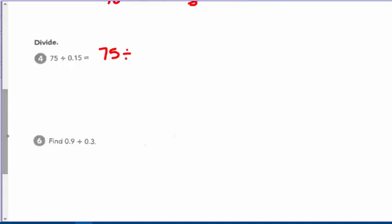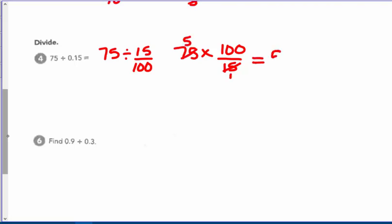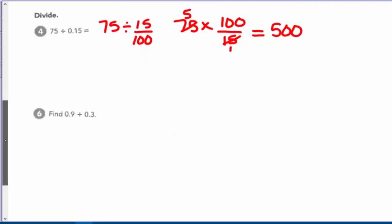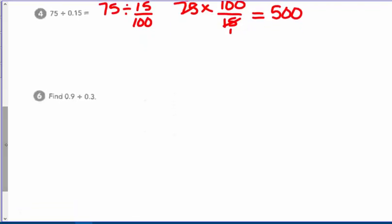75 divided by fifteen-hundredths: change it to 75 times the multiplicative inverse, one-hundred-fifteenths. 15 is a factor of 75 — it goes in five times — so five times a hundred is 500. It's a fraction-friendly problem; way better than doing long division with a decimal. Nine-tenths divided by three-tenths.